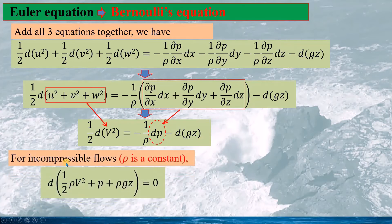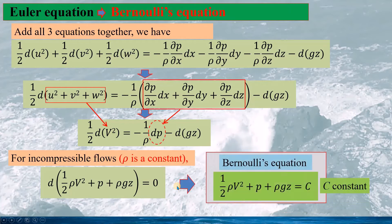When we consider an incompressible flow, the density is constant. We can then write the equation such that the differential of the entire expression equals zero. Integrating this, we obtain Bernoulli's equation, where c is the integral constant representing the total pressure in the fluid.